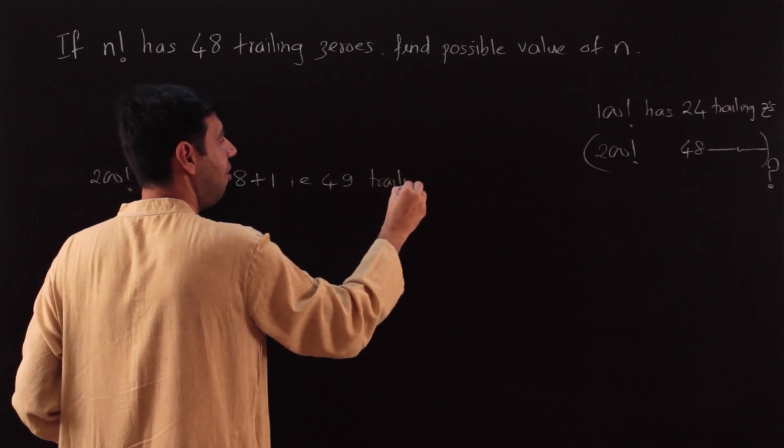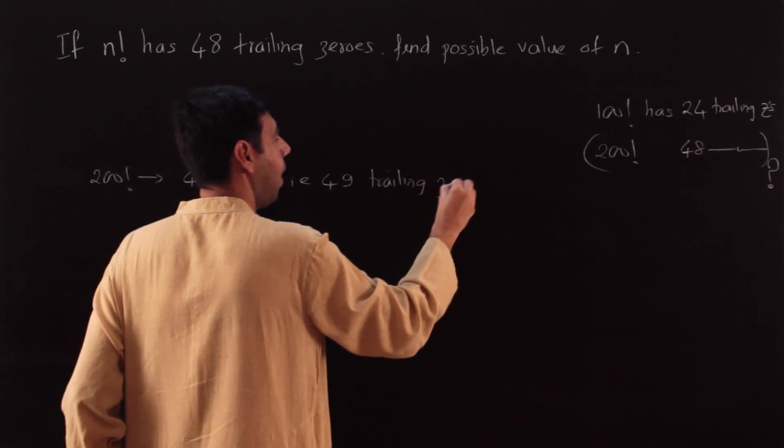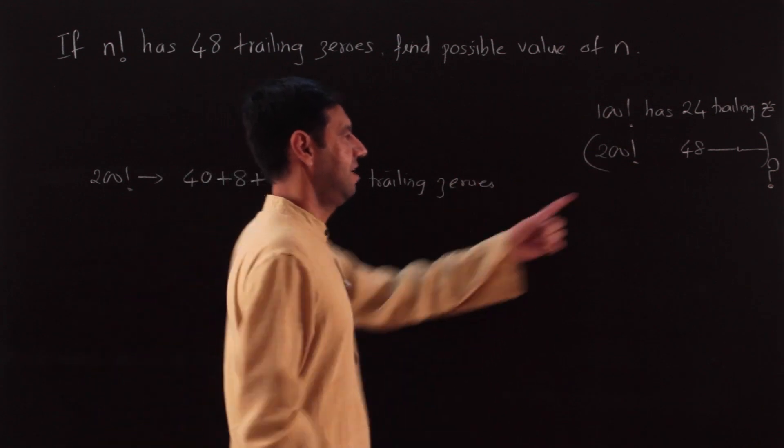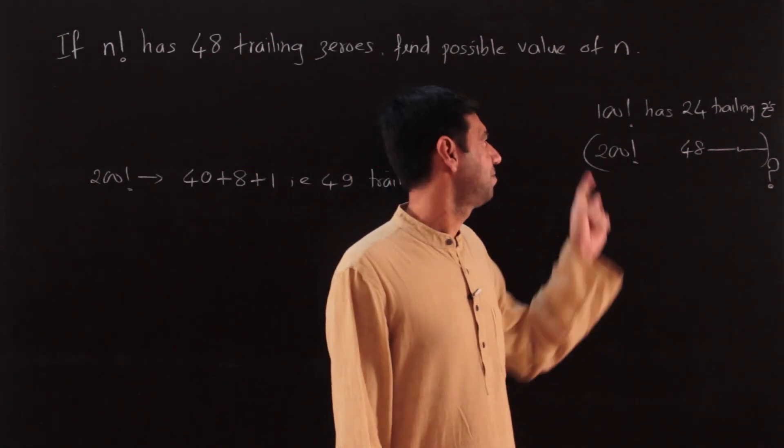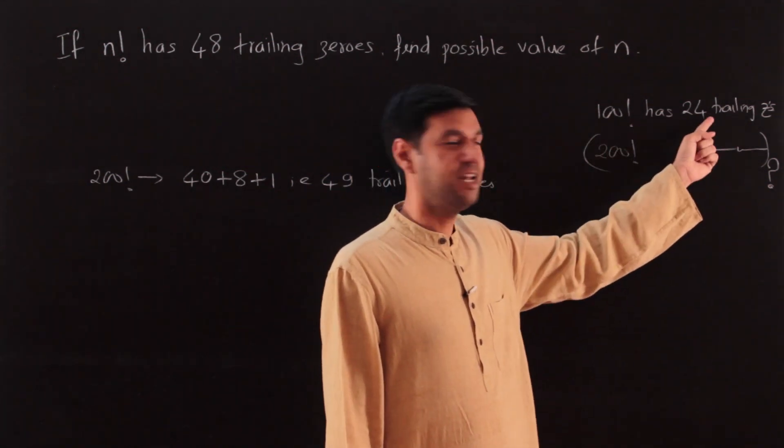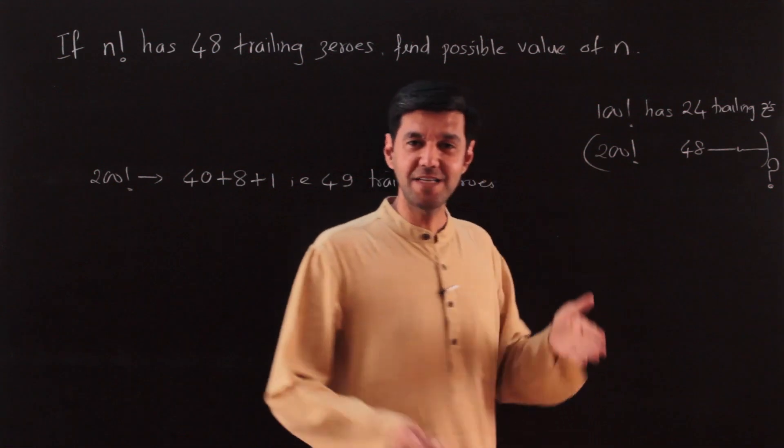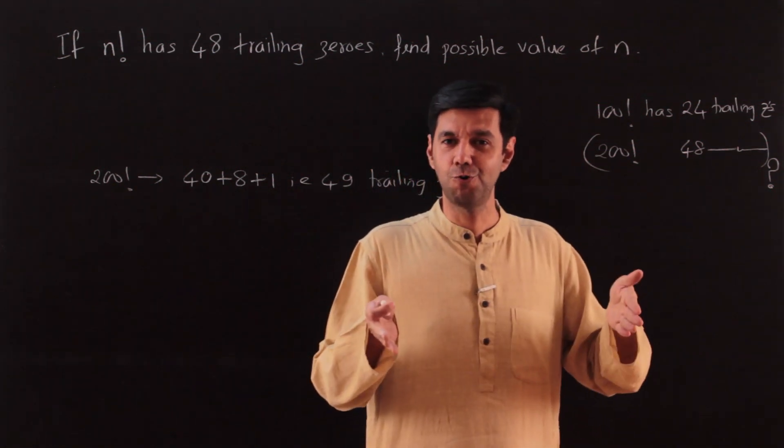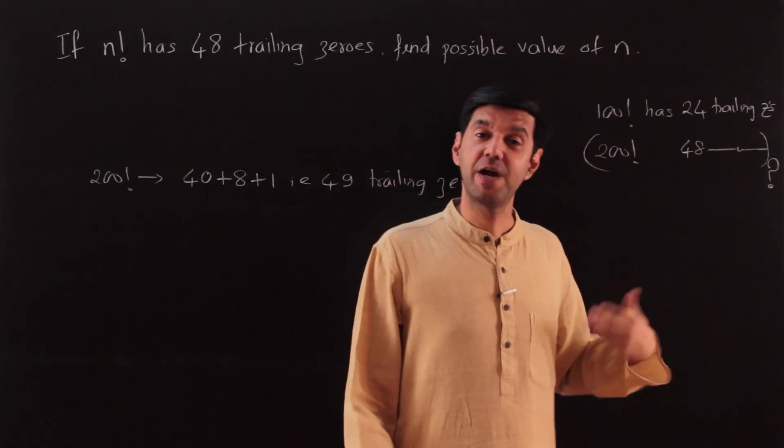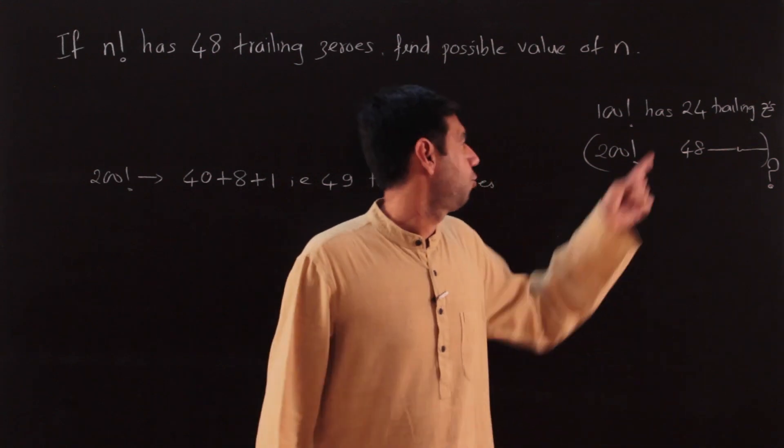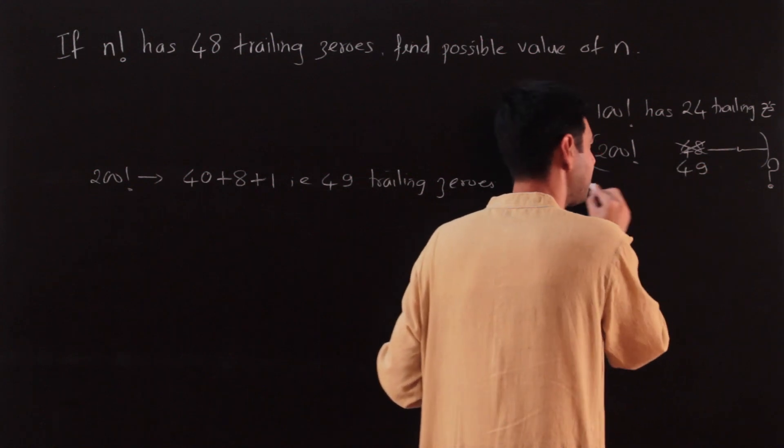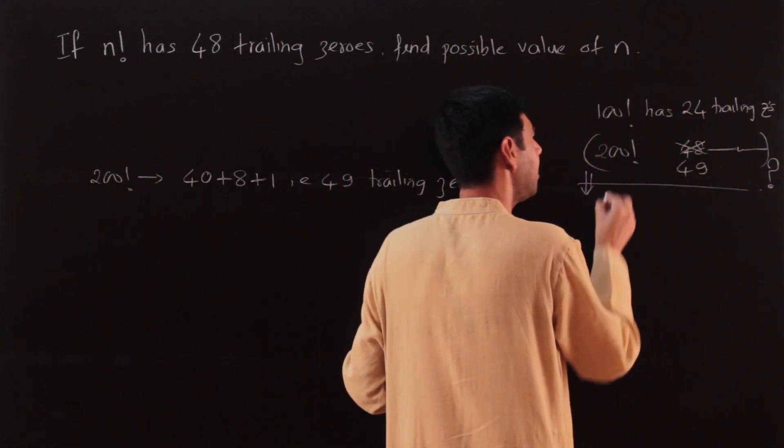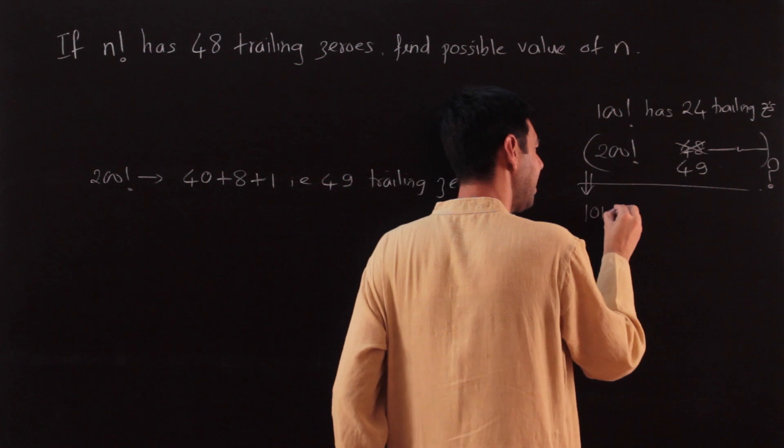Oh, so I was off by 1. In fact, you should think: if 1 to 100 has 24 zeros, why is it from 101 to 200 I have 25 zeros? 24 and 24 would have made it 48, but it's not 48, it is 49.